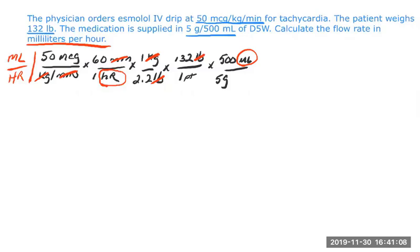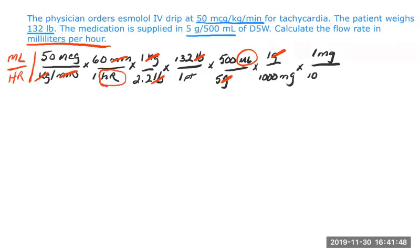From here, we just need to get rid of micrograms and grams, so we're going to add conversion factors until those cancel out. We know that one gram is 1000 milligrams, so we can cancel out grams. And we know one milligram is 1000 micrograms, so now we can cancel out milligrams and micrograms. Now we have everything in this problem canceled out.